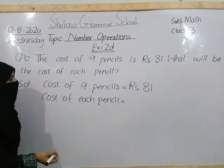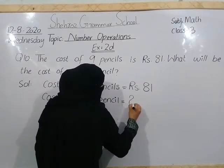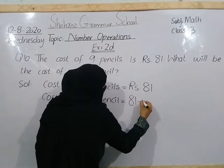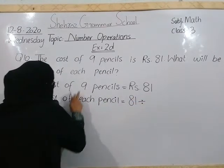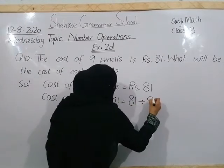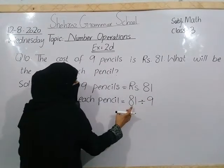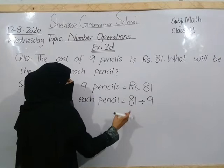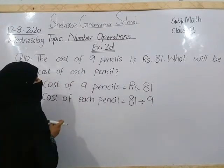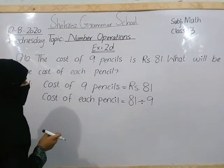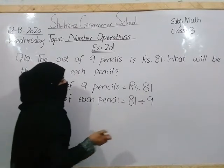Okay students, अब हमारे पास जो 9 pencils की price 81 है, उसे divide कर देंगे number of pencils से, जो कितनी है हमारे पास? 9. हमारे पास 9 pencils की price है 81, तो हम 81 को 9 से divide करेंगे, ठीक है? तो हमारे पास एक pencil की price आएगी.